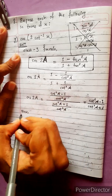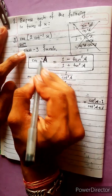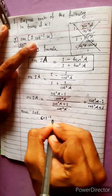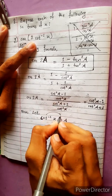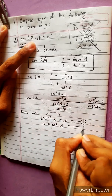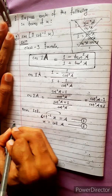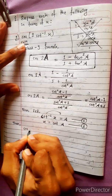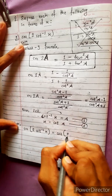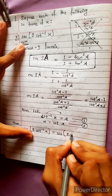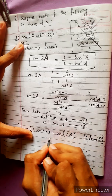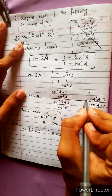Now, what is given in the question? In the question cos 2a is given. First, we let cot inverse x equals to a — this is equation 1. Taking cot on both sides gives x equals cot a — this is equation 2, which is very important. Then, cos 2 times cot inverse x equals cos 2a, replacing cot inverse x with a from equation 1.